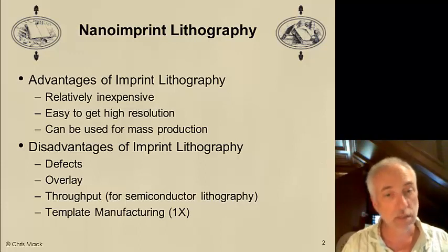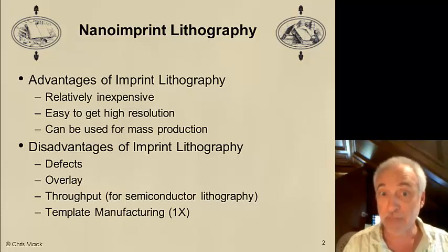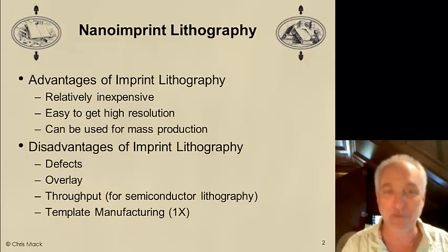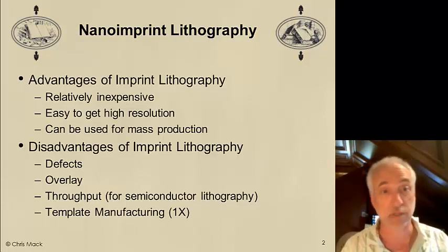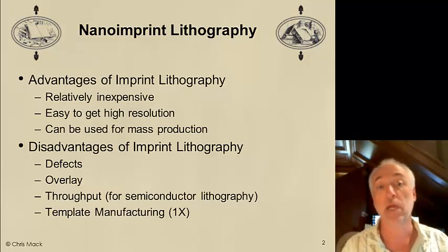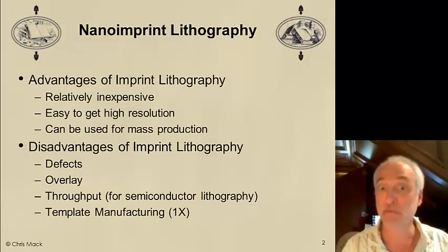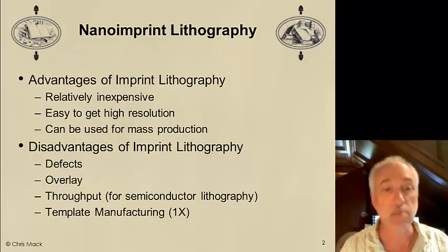Throughput is generally very high for imprint lithography for many applications. But in semiconductor manufacturing, we're used to extremely high throughputs. 193 immersion scanners can print at 240 to 300 millimeter wafers per hour — very, very fast throughput — and it's hard for even a high-throughput technology like imprint lithography to keep up with.